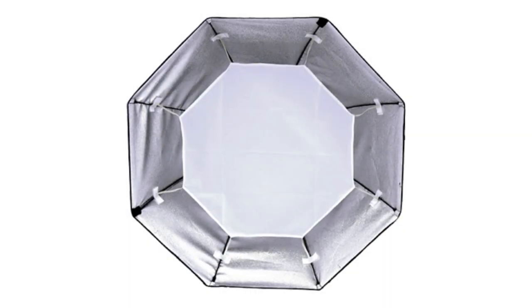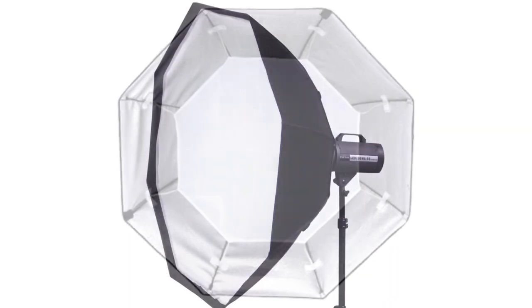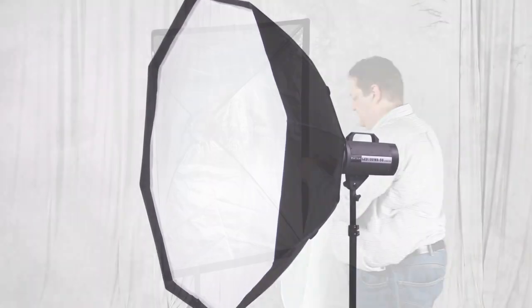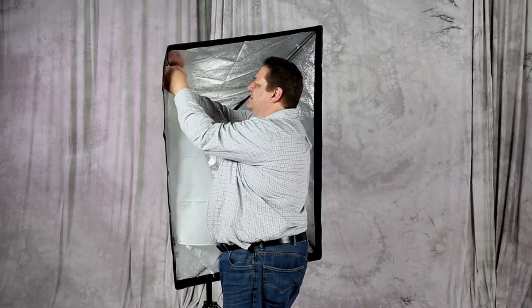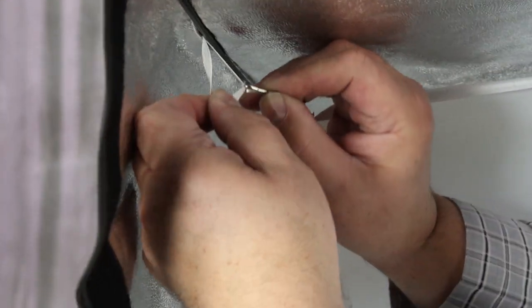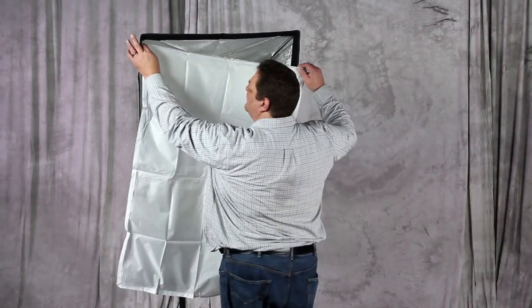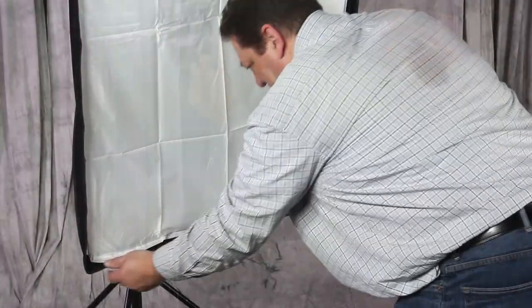Our pro softboxes come with two layers of diffusion to help soften and diffuse your light. Start with the inner diffusion panel and attach it to the interior of the softbox, clipping it to the four elastic loops. Take the outer diffusion panel and attach it to the Velcro rim around the inside edge of the softbox, and you're finished.